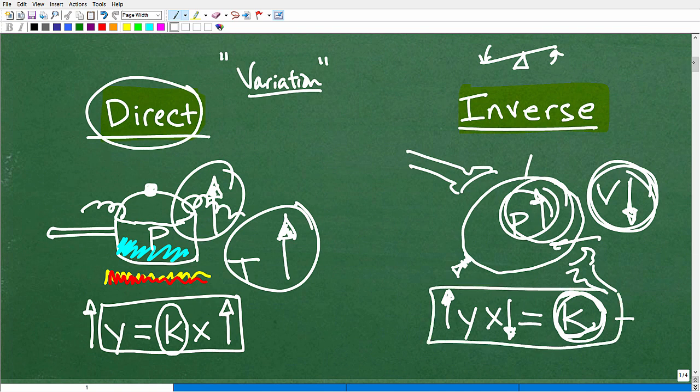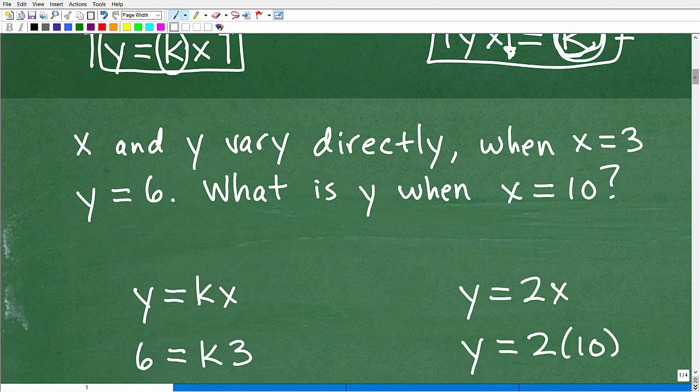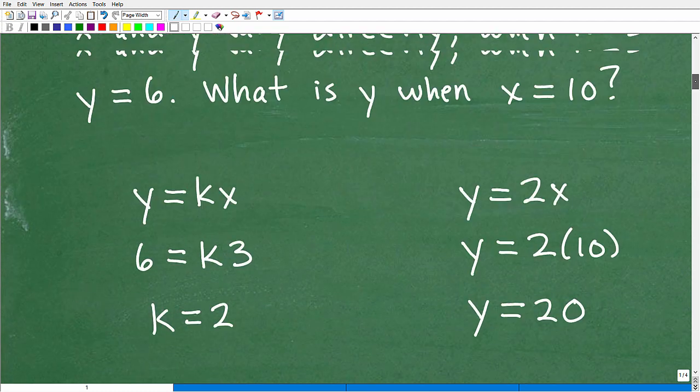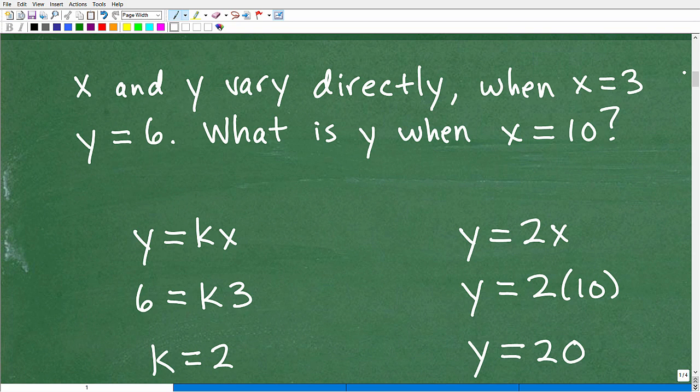So those are the two general formulas for both direct and inverse variation. Now, let's go ahead and take a look at a basic example. And I don't want to make this video too long. So we'll take a look at a basic example of variation.